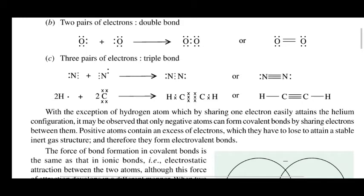When two pairs of electrons are shared between two atoms, a double bond is formed. For example, in an oxygen molecule, the two oxygen atoms share two pairs of electrons, forming a double bond. When three pairs of electrons are shared, a triple bond is formed, as seen in nitrogen molecules.